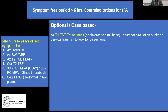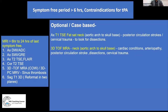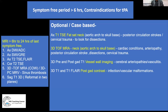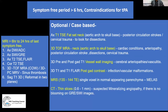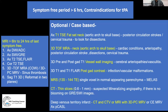Additional sequences are required in certain scenarios: for posterior circulation stroke or cervical trauma, include T1 fat-sat neck post-contrast. Include 3D TOF of the neck for cardiac disorders, arteriopathy, or posterior circulation stroke. Vessel wall imaging is useful when suspecting arteriopathy or vasculitis. Post-gadolinium contrast is used when suspecting infectious stroke or vascular malformation. MR spectroscopy is used in specific stroke patterns like MELAS. CT also has a role in specific situations like mineralizing angiopathy, and CT or MR venogram for suspected deep venous territory involvement.